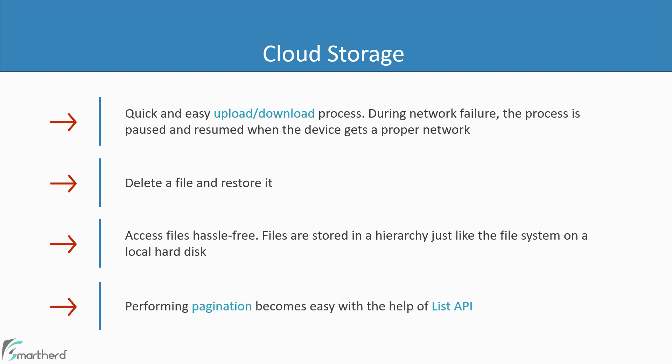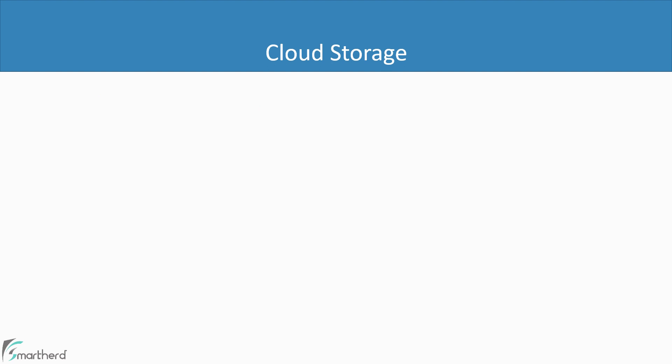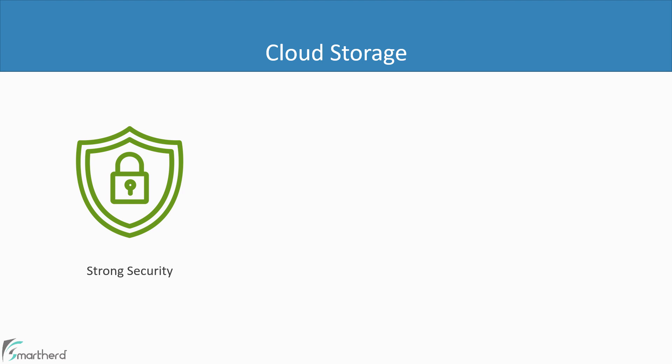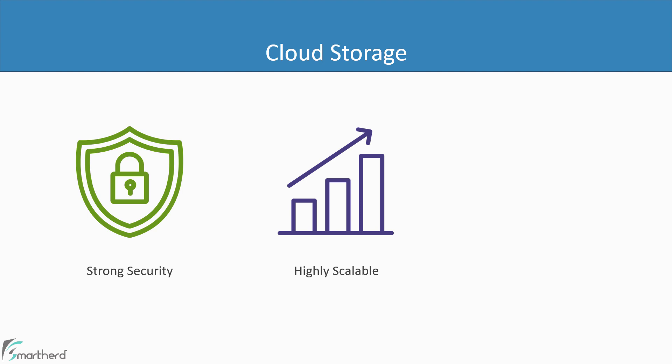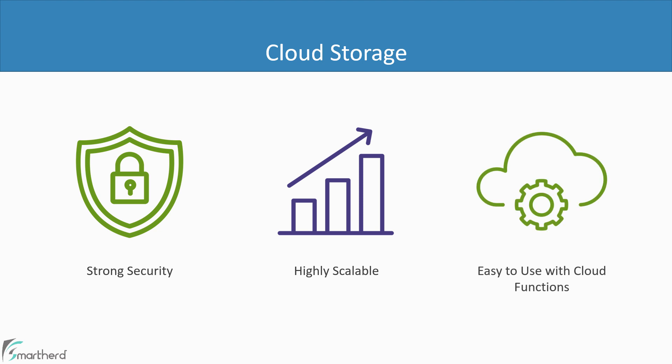If you delete a file, you can even allow a user to restore it. Accessing a file stored in Cloud Storage is really quick and easy — files are stored in exactly the same way as in a local hard disk. If you have a very large number of files, using the Android List API you can even apply pagination. All of these are possible by adding just a few lines of code, which means instead of spending time handling files or errors, you can spend more time building your application. Cloud Storage by default provides strong security, and if the number of files increases, you can easily scale your storage. Best of all, it uses the same infrastructure used by popular applications like Spotify and Google Photos.